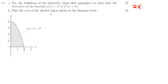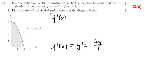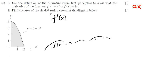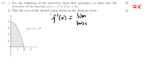The first principle formula is very important. f'(x) — which is the same as y' or dy/dx — is equal to the limit as h approaches 0 of [f(x+h) minus f(x)] divided by h. What this means is: in the function, we replace x with x+h in the first part, then subtract the original function f(x), and divide by h.